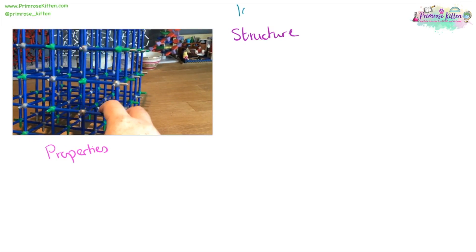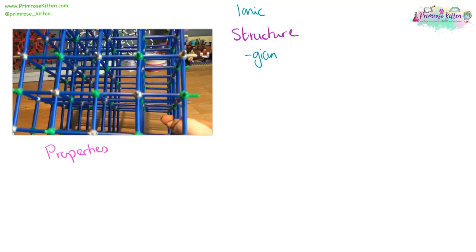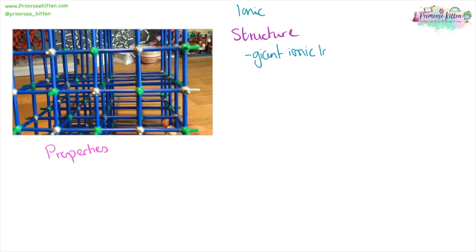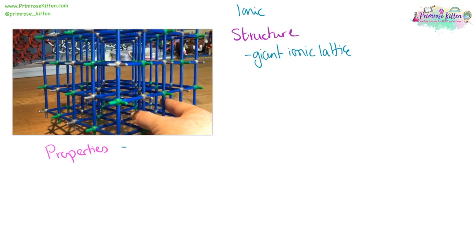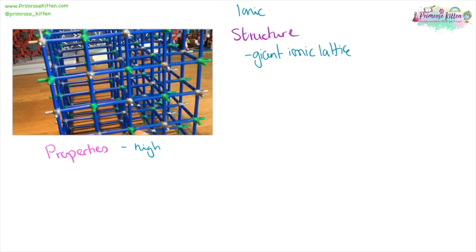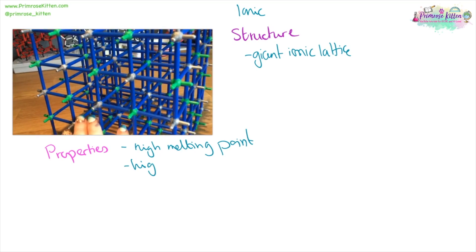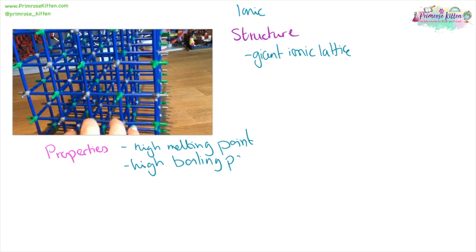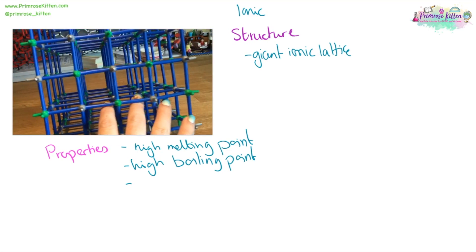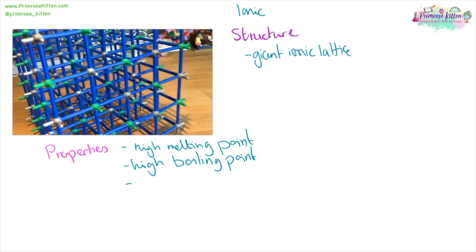For ionic compounds, the structure is a giant ionic lattice. Properties: it is going to have a high melting point, high boiling point, and it is only going to conduct when molten or dissolved. This is because the ions need to be free to move.